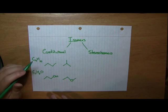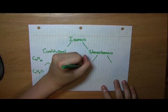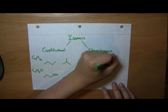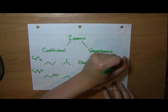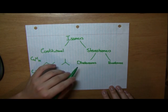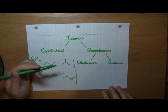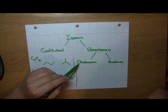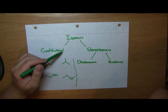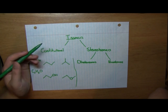Now what about stereoisomers? Well, there are two main branches of stereoisomers: we can either have diastereomers or we can have enantiomers. Because enantiomers are more difficult to deal with, we'll mainly focus on diastereomers in this video. So let's first start with the definition of diastereomers. A diastereomer is a group of molecules which share the same molecular formula, the atoms are connected in the same order, but they are not mirror images of each other.